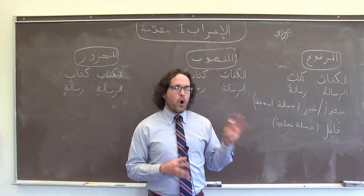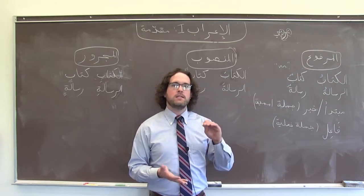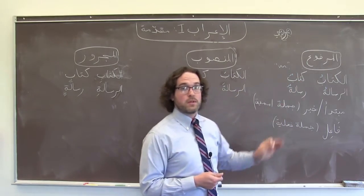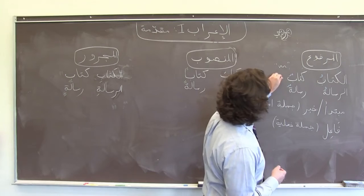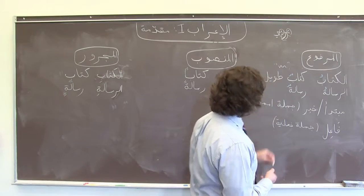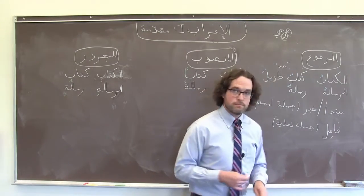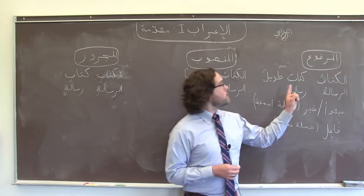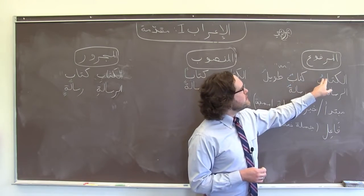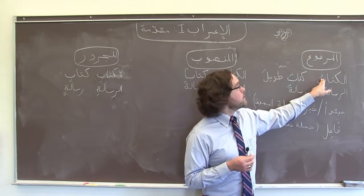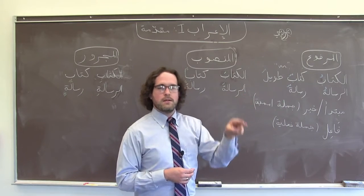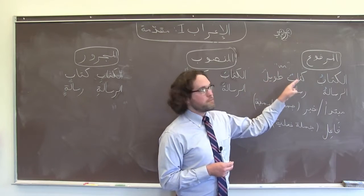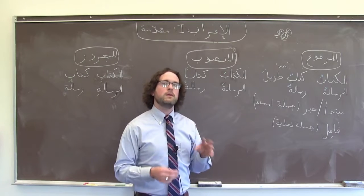Remember that adjectives always agree with their nouns in terms of definiteness, number, and case. So if we're talking about a كتاب and we wanted to say 'a long book,' and it were fully vocalized, we would say كتاب طويل. Adjectives obey the same rules. You'll also notice that مرفوع agrees with the verb voweling — just as verbs in مرفوع often take a ضمّة at the end, مرفوع on nouns uses the same vowel, so that can be a helpful mnemonic device.